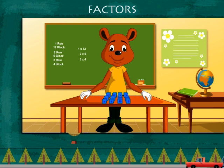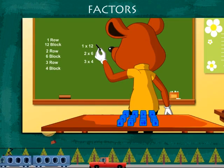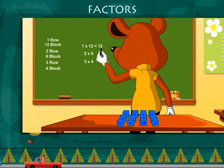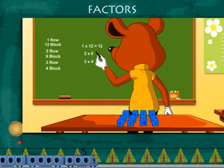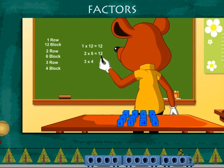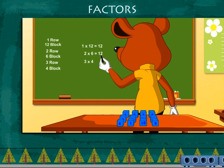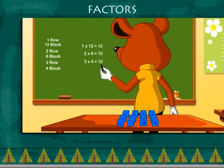Robby has made his point clear. One into 12 is equal to 12. Two into six is also equal to 12. And three into four is also equal to 12.